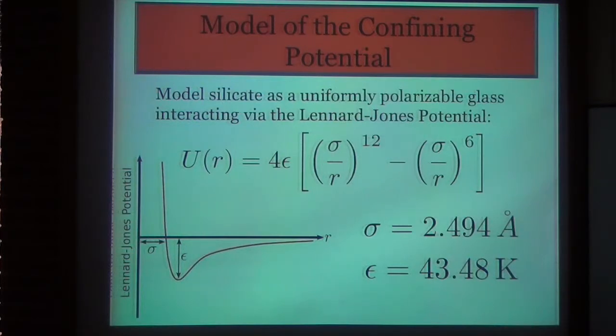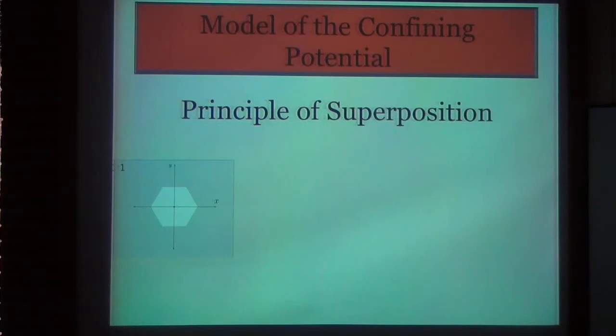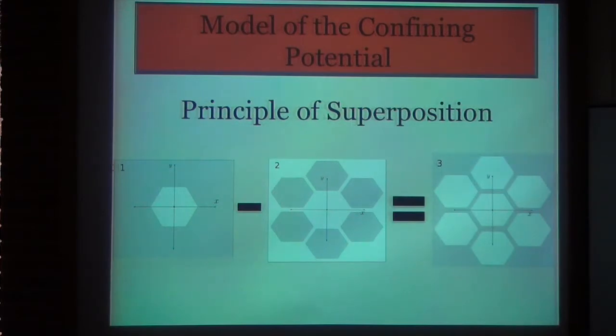So now I want to talk about how I constructed the external potential operator. What I did was model the surrounding silicate as a uniformly polarizable and continuous glass, interacting with helium via the Lennard-Jones potential, which is shown here. Talking about the structure of this potential, you have an attractive van der Waals term here, and a semi-empirical repulsive term, which is added to account for the hardcore Pauli repulsion of these particles. Sigma is a length scale that is a measure of the size of the hardcore, and epsilon is an energy scale. Energy basically sets the depth of the potential minimum of the interaction between particles, and sigma gives you a measure of how far the particles are from each other before the interaction becomes repulsive.